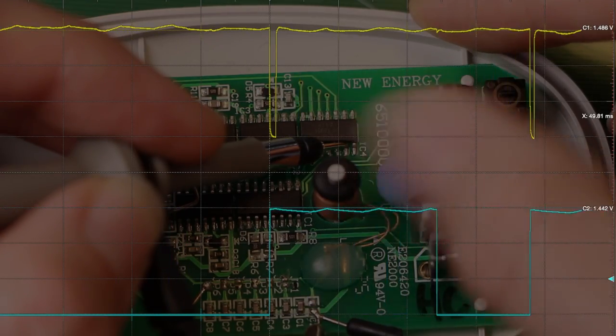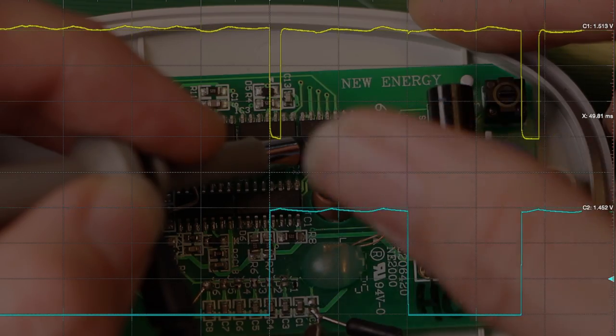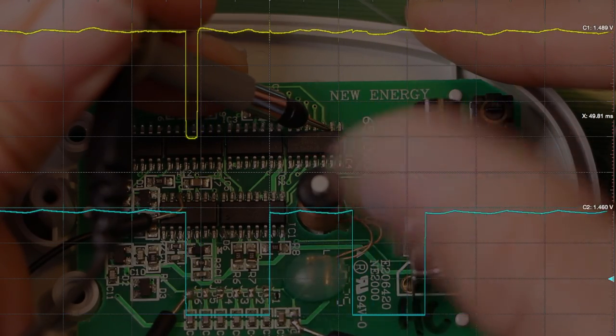So this flip-flop is only detecting half of the scroll up events, just the ones with a positive edge on quadrature B. Now this one's detecting the other half of those upward scrolling events on the negative edges.